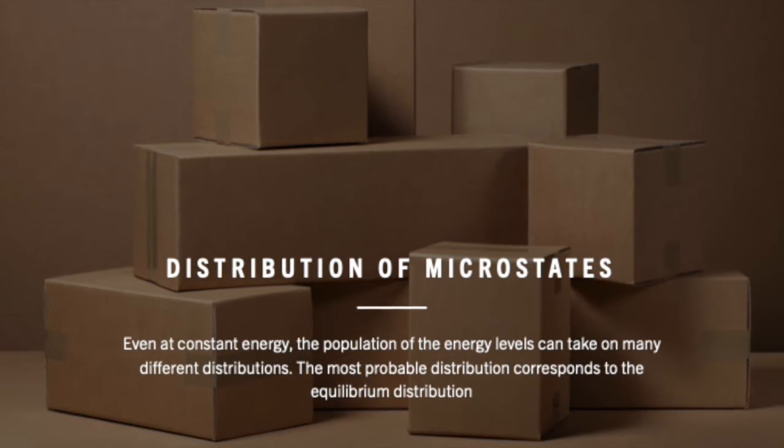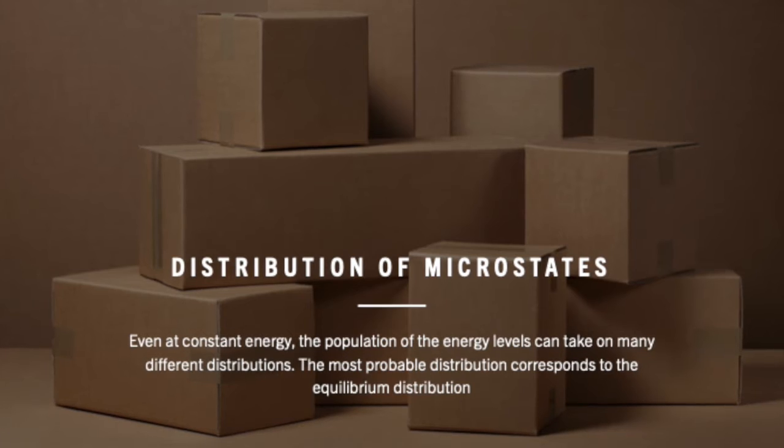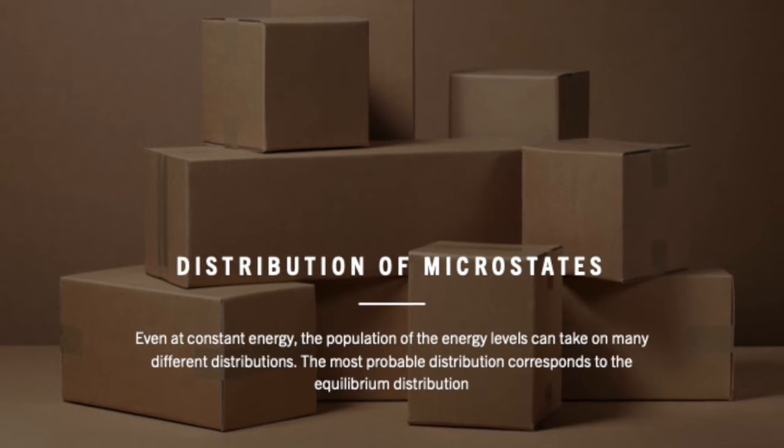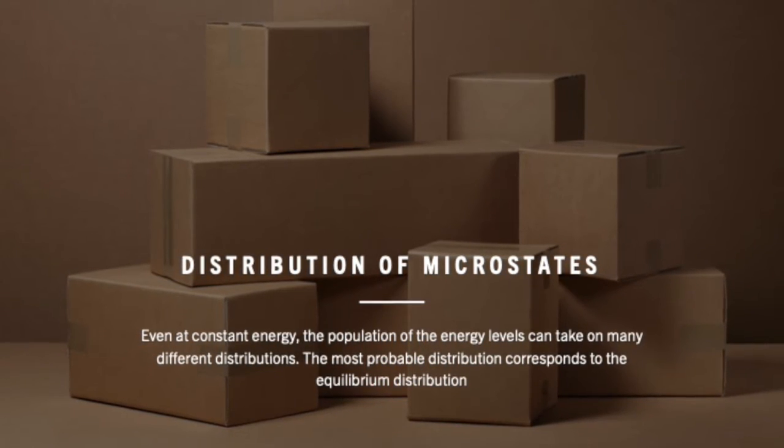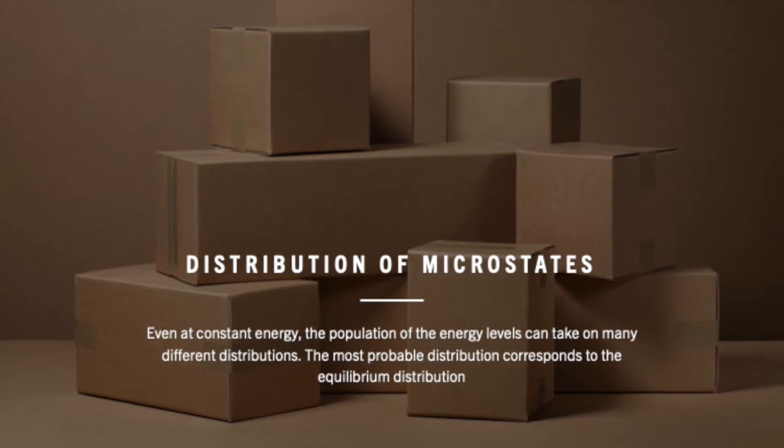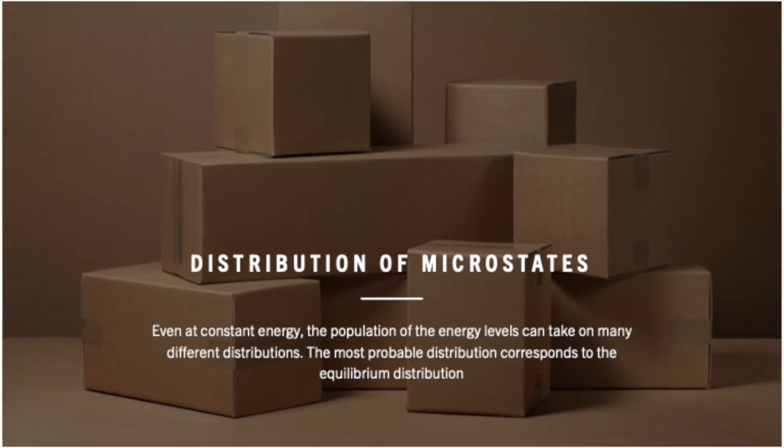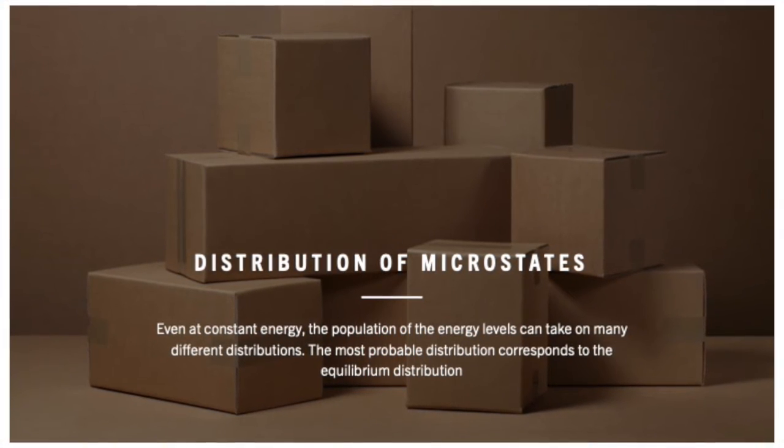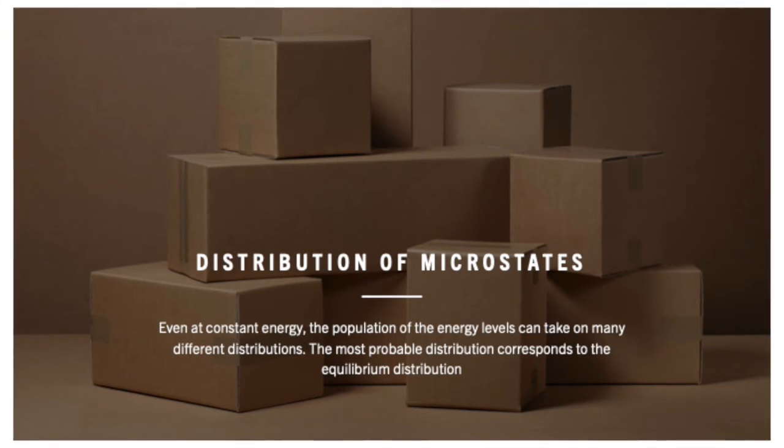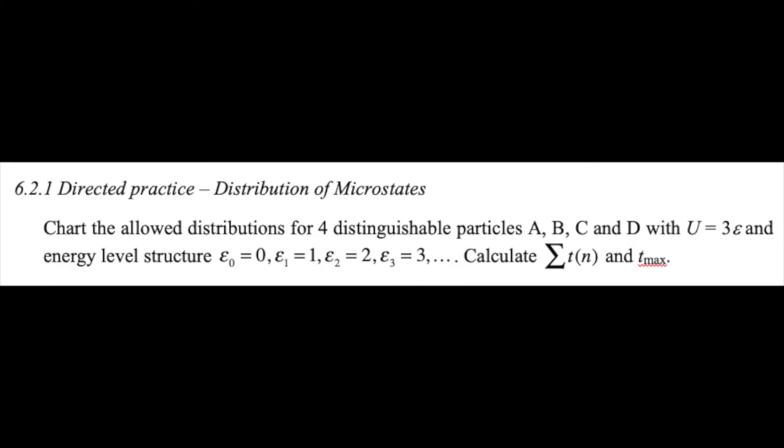Let's do the directed practice on the distribution of microstates. These distributions are important because they help us to understand the equilibrium state of a system. The most likely distribution corresponds to the equilibrium distribution. Other distributions correspond to fluctuations away from equilibrium.